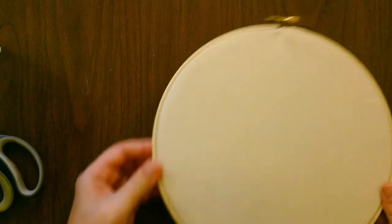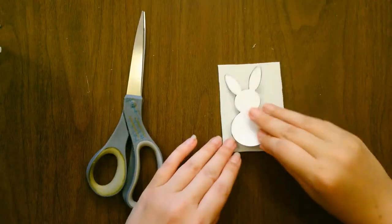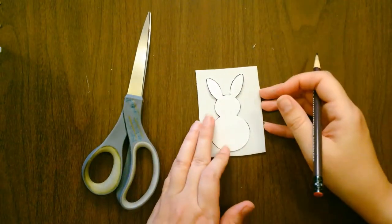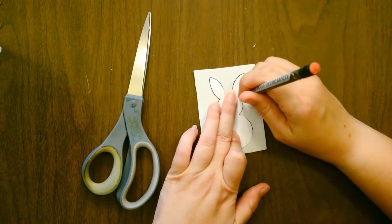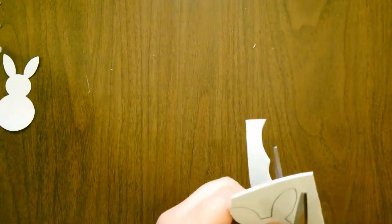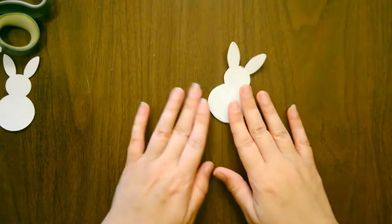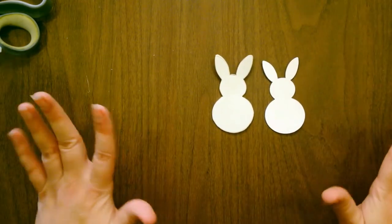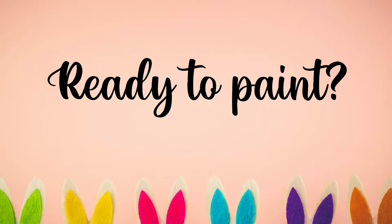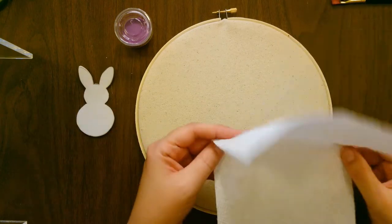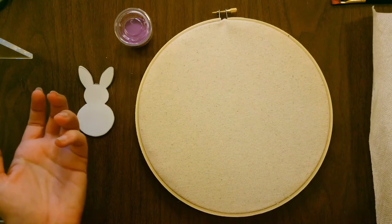The next part is you're going to need your template, your scissors, your foam, and your pencil. Just trace around your template and then cut it out. Here's my foam template and my paper template, and see they turned out pretty good. One thing I did forget to mention that is very handy to have during this project is some paper towels. You're painting, it's good to have paper towels on hand.